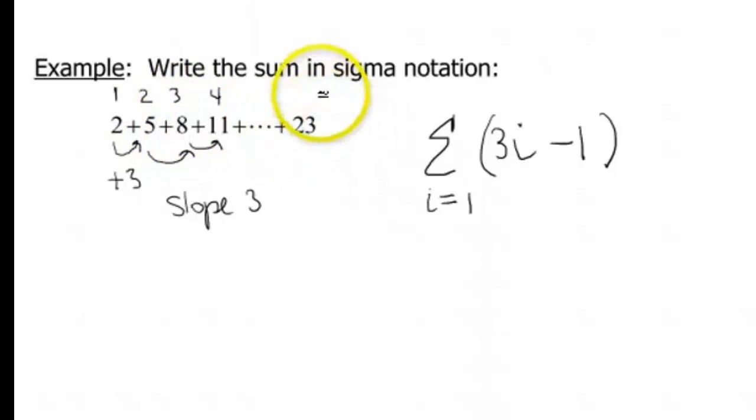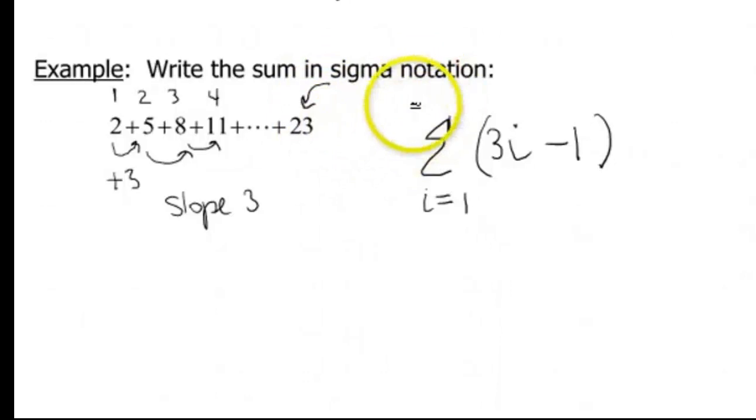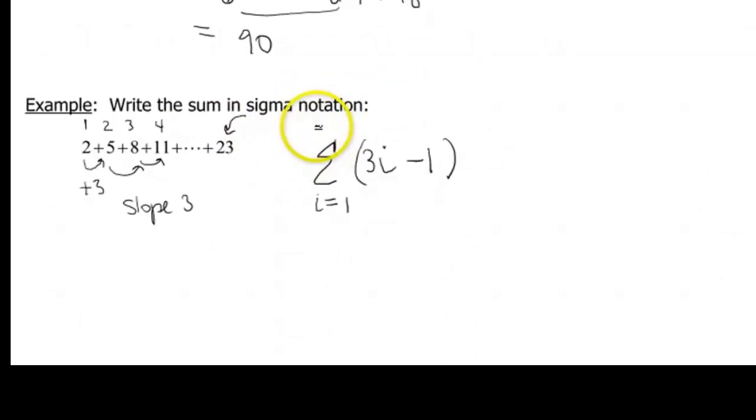Okay, so now I gotta figure out, what am I gonna plug into my function to get out my last value here of 23? And then that's gonna correspond to what my ending indices gonna be, my ending index. So we could just do this by algebra. So let's do 3i minus 1 is gonna equal 23. So then 3i is gonna be 24. So i is gonna be 8.